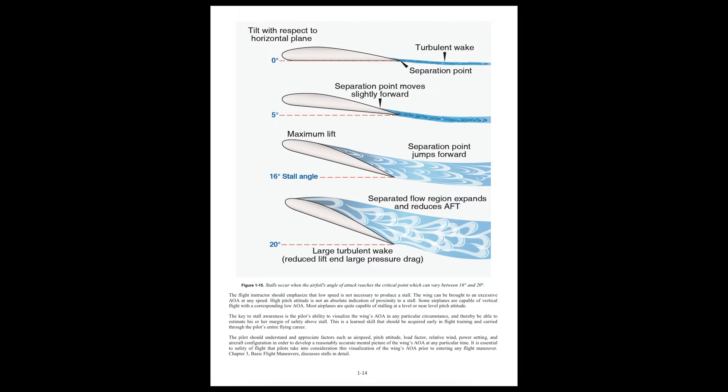The key to stall awareness is the pilot's ability to visualise the wing's angle of attack in any particular circumstance, and thereby estimate the margin of safety above the stall. This is a learned skill that should be acquired early in flight training and carried through the pilot's entire flying career. The pilot should understand factors such as airspeed, pitch attitude, load factor, relative wind, power setting, and aircraft configuration in order to develop an accurate mental picture of the wing's angle of attack. It is essential to safety that pilots visualise the wing's AOA prior to entering any flight manoeuvre.